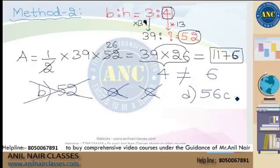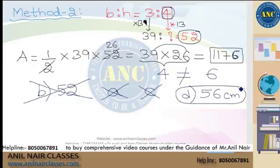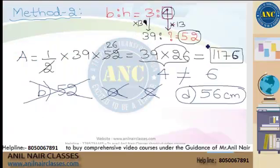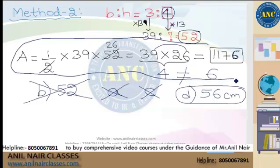In Method 2, I don't use any variables and can solve so easily. If you are lucky, since height according to the ratio is 4, the answer must be a multiple of 4. If only one option out of four is a multiple of 4, you can directly mark that option and move forward without checking further.